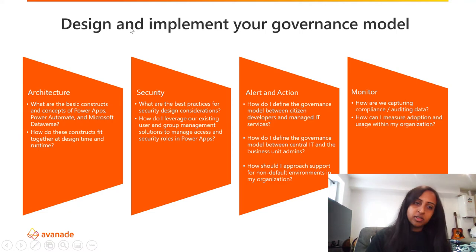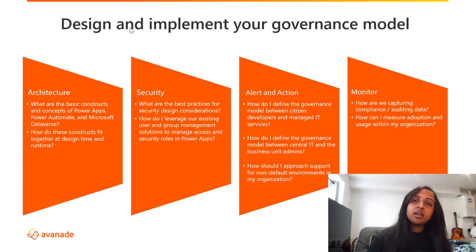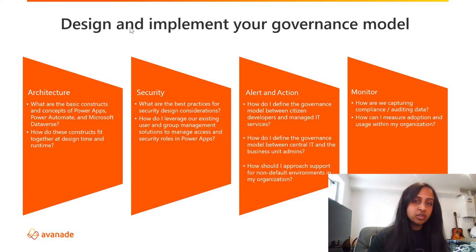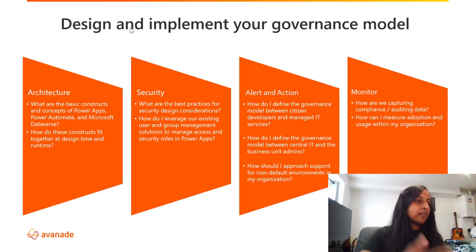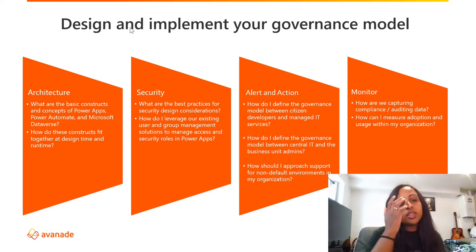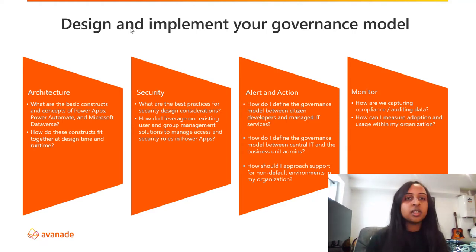Designing and implementing your governance model has four pillars. The first is architecture — which tools are you using within your actual solution? With Power Apps and Power BI, we need to make sure we're using the right solutions as we scale. This means if you're doing a reporting solution, make sure you use Power BI; if you're doing more of an input/output solution, then maybe Power Apps is more suited. It's also about how these different constructs fit together and the performance implications as we get bigger and bigger within our organisation.